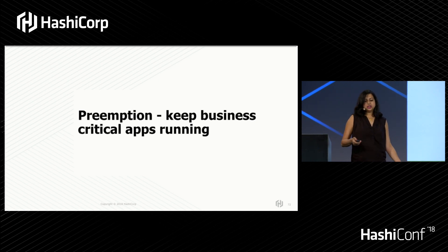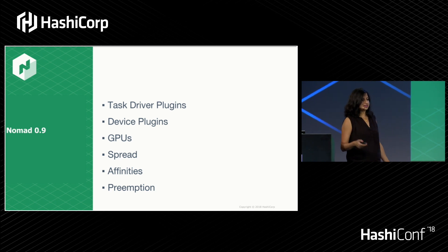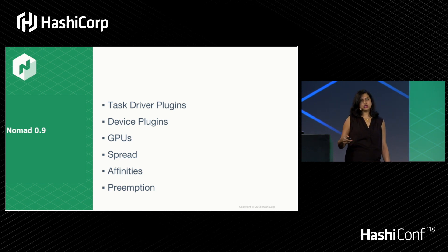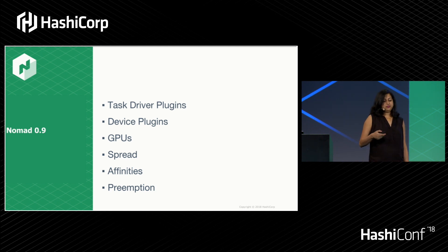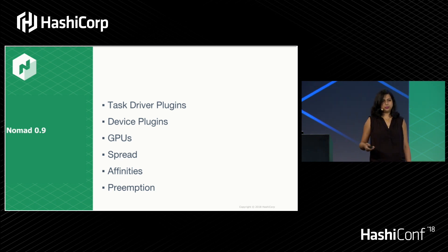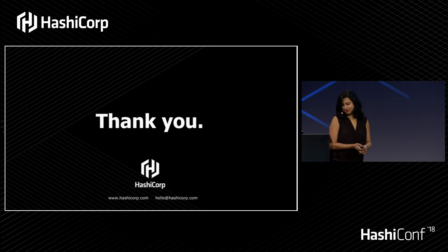In a nutshell, preemption keeps your business-critical apps running. To summarize everything coming in Nomad 0.9: task driver plug-ins making the runtime driver system extensible, device plug-ins with GPU support, and scheduler improvements including spread, affinities, and preemption.